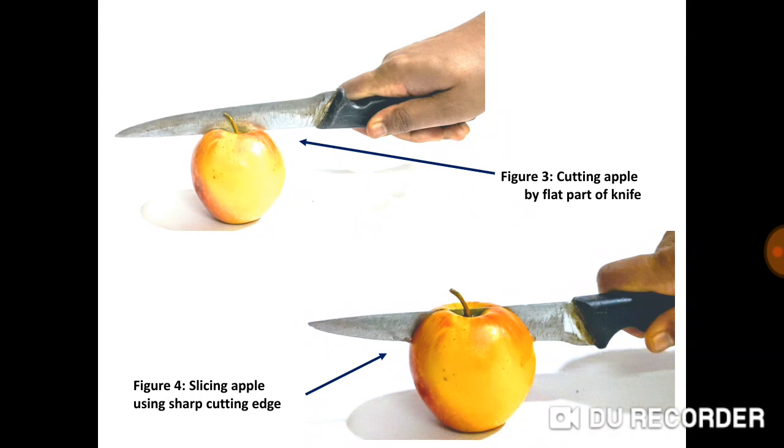However, from Figure 4, where the sharp cutting edge of the knife was used for cutting or slicing an apple fruit, very little force was required. Why? The sharp cutting edge of the knife has very small surface area, so the pressure exerted to cut or slice the fruit was high.